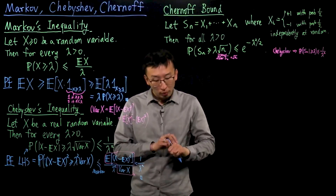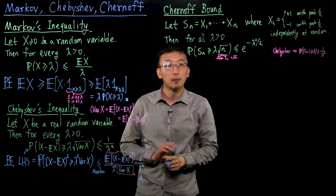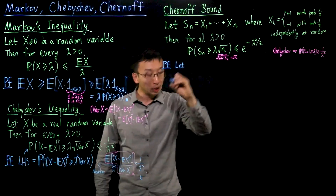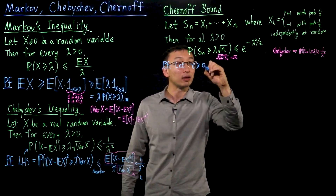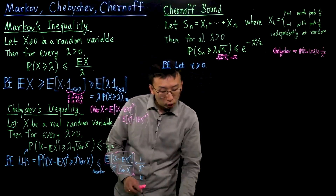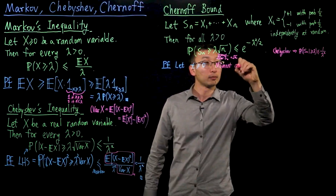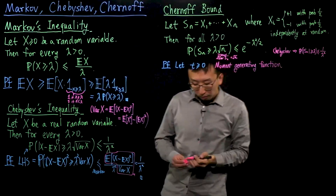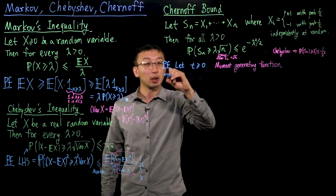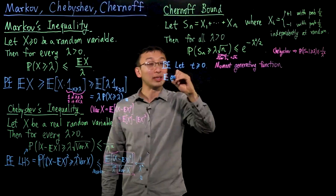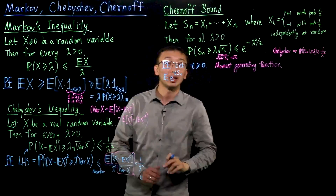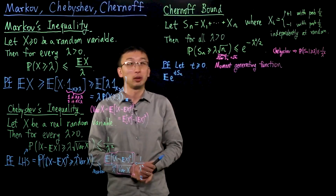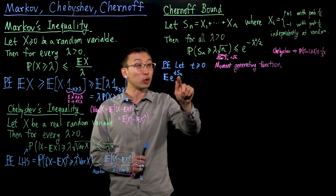Let us now prove the Chernoff bound. For the proof, we'll need to introduce a new idea: the moment-generating function. Let T be a strictly positive real number, and consider the moment-generating function given by the expectation of e to the T times S_n. So instead of considering the expectation of S_n directly, we consider the exponential applied to the random variable. The expectation is over the randomness in S_n.